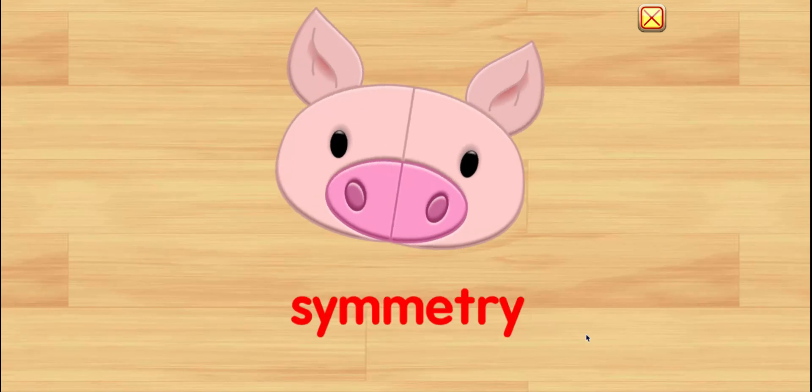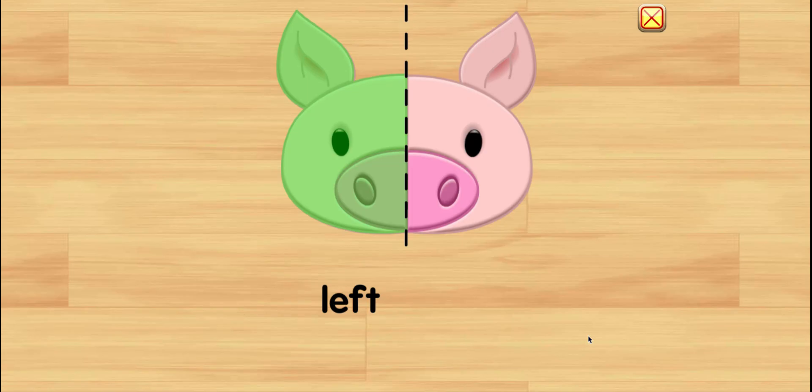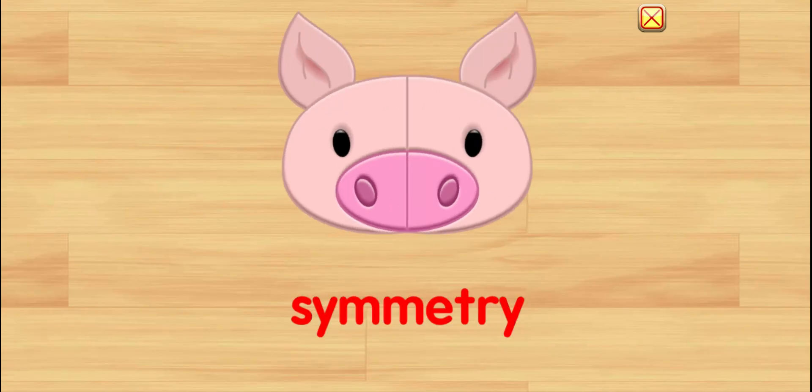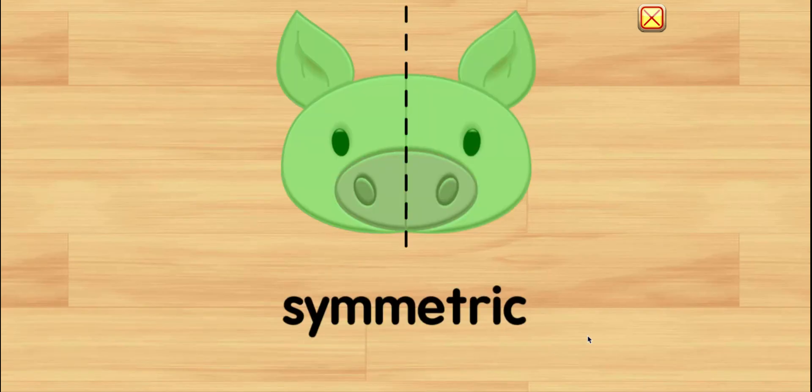Symmetry, symmetry, draw a line of symmetry. On the left, on the right, each side the exact same size. One line down the middle, will help you solve the riddle. Symmetry, symmetry, it's so easy you can see. When both sides are the same, then symmetric is the name.